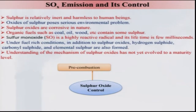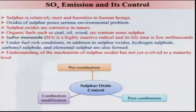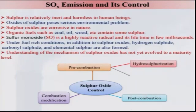There are three ways of controlling sulfur oxides from the combustion system: pre-combustion, combustion modification, and post-combustion. These three methods are valid not only for SOx emission control but also for NOx and COx emission control as a matter of fact. Let us look at the pre-combustion method. Hydro-desulfurization is one method; gasification is another.